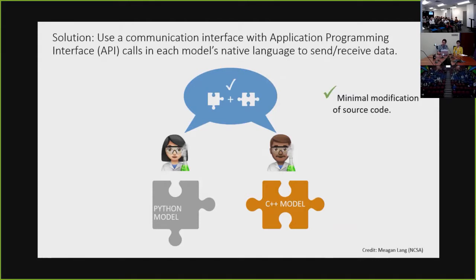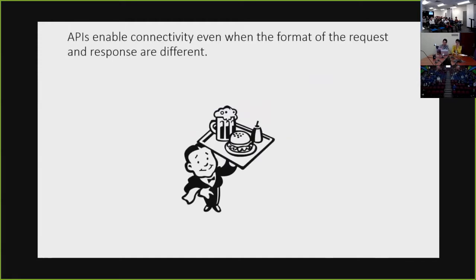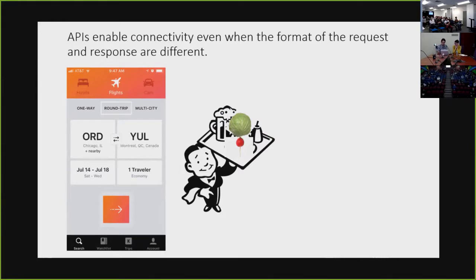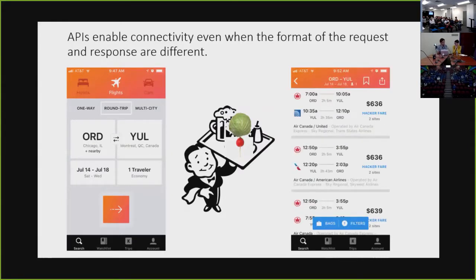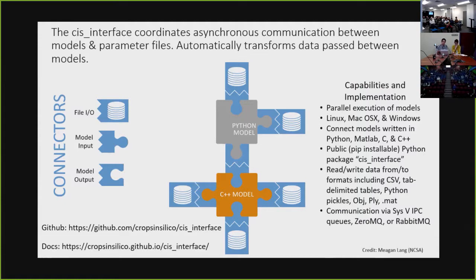So this ends up reducing the modification of source code. We don't need individual model developers to be aware of the communication mechanism, although of course they are able to be so. And this also allows connectivity when the format of the request and the response are different. So the SysInterface is a Python package. You can actually find both the documentation at our github.io site at slash sys underscore interface, and the source code is completely open. And last I saw it was at 99% test coverage.